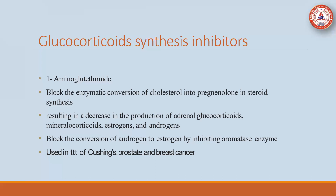What are the treatments used for Cushing syndrome — glucocorticoid synthesis inhibitors? The first drug is aminoglutethimide: it blocks the enzyme conversion of cholesterol into pregnenolone in steroid synthesis, resulting in decreased production of adrenal glucocorticoids, mineralocorticoids, estrogen, and androgen. It also blocks the conversion of androgen to estrogen by inhibiting the aromatase enzyme, and is used in the treatment of Cushing syndrome, prostate cancer, and breast cancer.